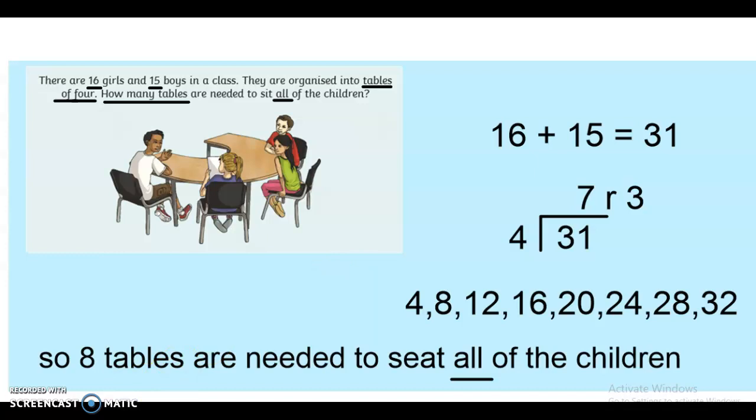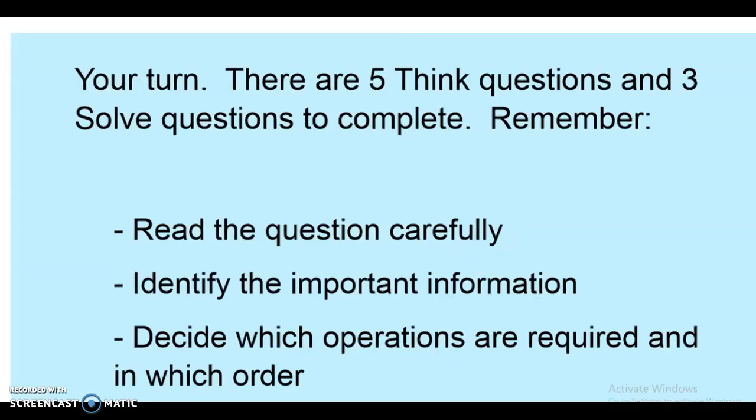If you have got any problems whatsoever, you can email us at the year five email, which is written down in your reading record books. You have now got five think questions and three solve questions to complete. Remember what we've discussed. Read the question carefully. Identify all of that key information, not just the numbers, the words that will give you clues as to which operations you need to use. Decide the operations and in which order you need to do them.